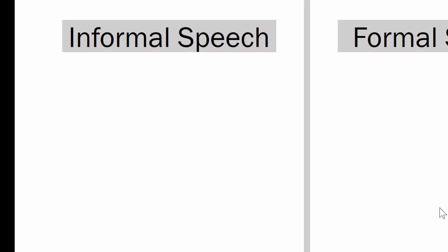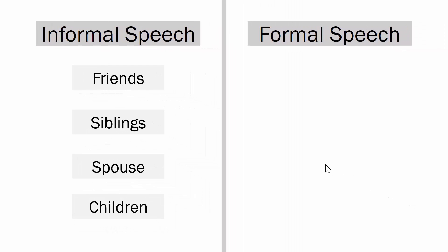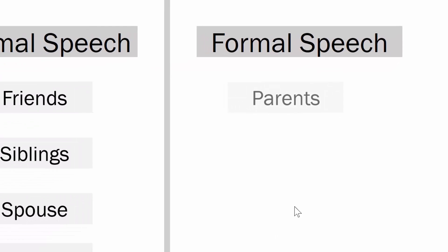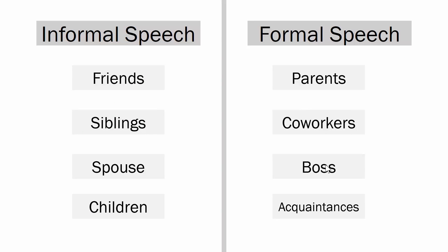When Anita was addressing her friend, she was using informal speech. Informal speech is what you might use with your friends, siblings, spouse, or children. Formal speech, as we saw with Anita and her boss, is used with your parents, co-workers, boss, or acquaintances. Some of these aren't perfect fits — you might address your parents very casually, or your boss informally depending on your relationship. You have to gauge that yourself, and it's a personal thing that comes from building relationships.